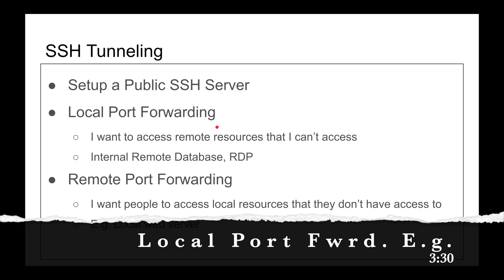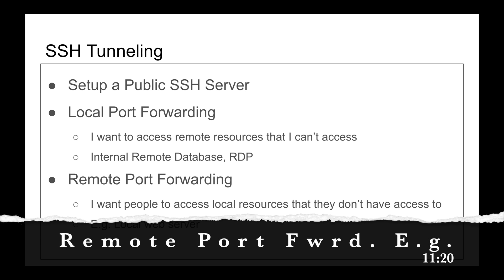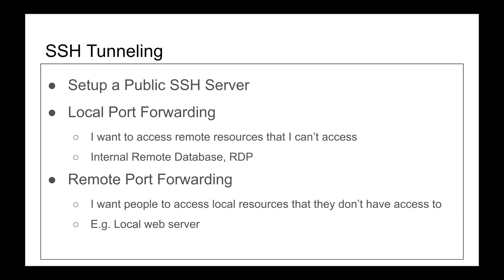To do SSH tunneling you need a publicly accessible SSH server. Since I don't have one, I'm going to build one from scratch using my own Raspberry Pi as a publicly accessible SSH server temporarily, and I'll disable that after the video. I'll use port forwarding to allow port 22 on my router to be routed to my Pi, and create a temporary noip DNS name that points to my public IP address.